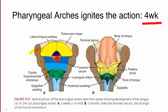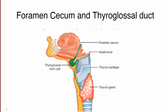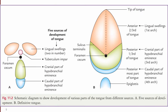Cranial to foramen cecum we have three swellings: two lateral swellings, also known as lateral lingual swellings, and one median swelling, also known as tuberculum impar. Caudal to foramen cecum we have a large median swelling or median eminence, also known as the hypobranchial eminence. The hypobranchial eminence is divided into two parts: the cranial-most portion and the caudal-most portion.